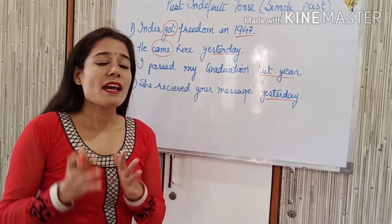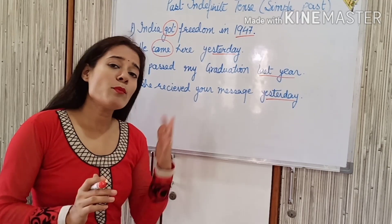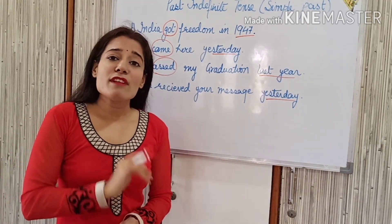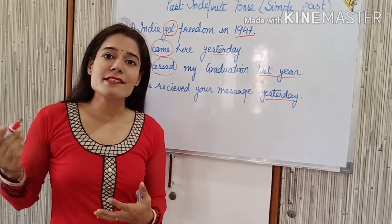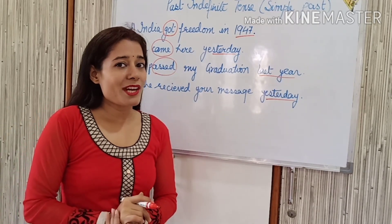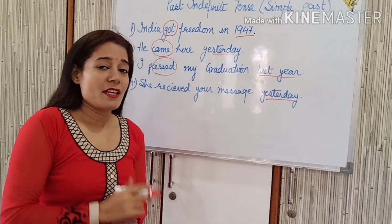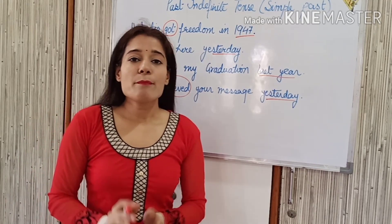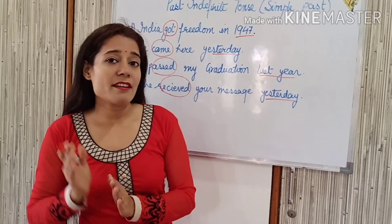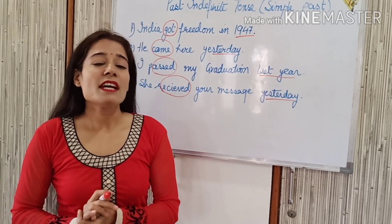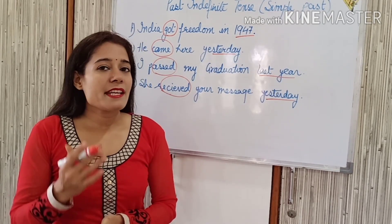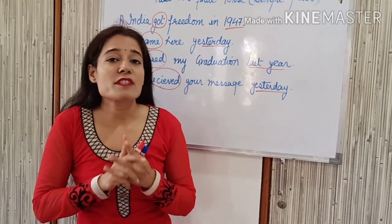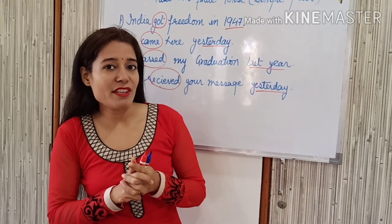He came here — it means CAME. We want to tell you that this is a real past thing: I passed, not 'I will pass.' This verb tells us that this is a past incident. Next is 'she received' — this is not 'receive' or 'receives' but 'received', which gives us the indication of the past. So here we identify simple past tense and past indefinite tense.